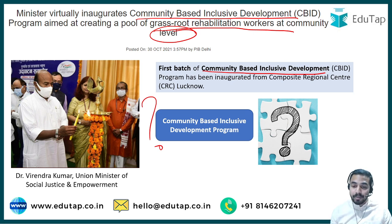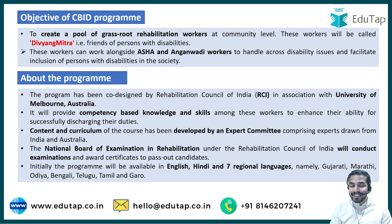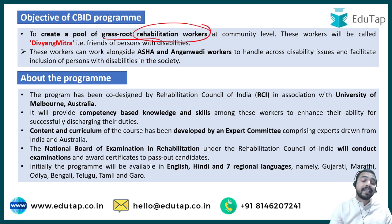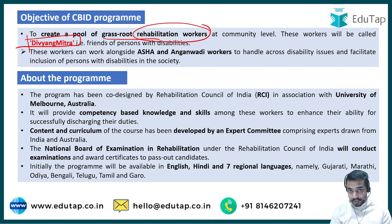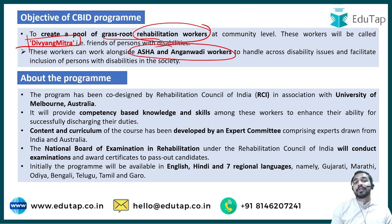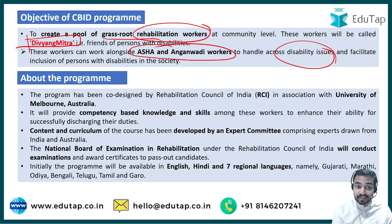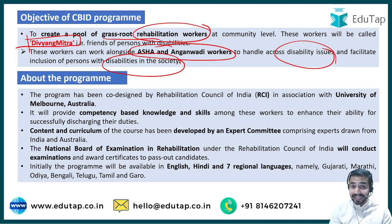The community-based inclusive development program has been launched to create a pool of grassroot-level rehabilitation workers, and these rehabilitation workers will be called Divyaang Mitra. Divyaang Mitra stands for 'friends of persons with disabilities.' These workers will work alongside ASHA and Anganwadi workers to handle across-disability issues and facilitate the inclusion of persons with disabilities in society.